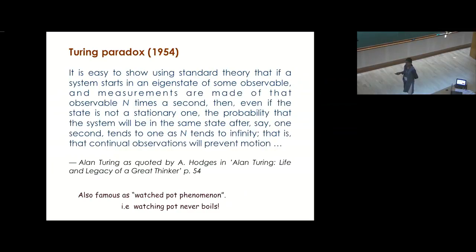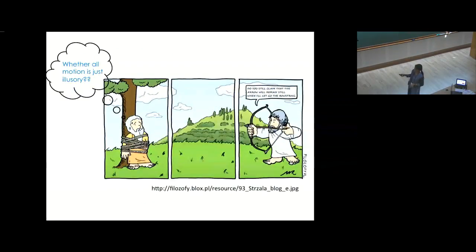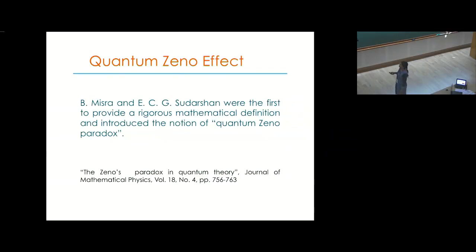Also, this paradox is famous as watched pot phenomena. Watching pot will never boil liquid in it. But merely observing any pot will not affect the time it takes to boil the liquid. That is why maybe Zeno over here is looking so scared when this man is asking, do you still claim that this arrow will remain still when I let go of the bow string? But yes, quantum mechanically such systems do exist. Mishra and Sudarshan were the first to provide a rigorous mathematical definition and introduce the notion of quantum Zeno paradox.